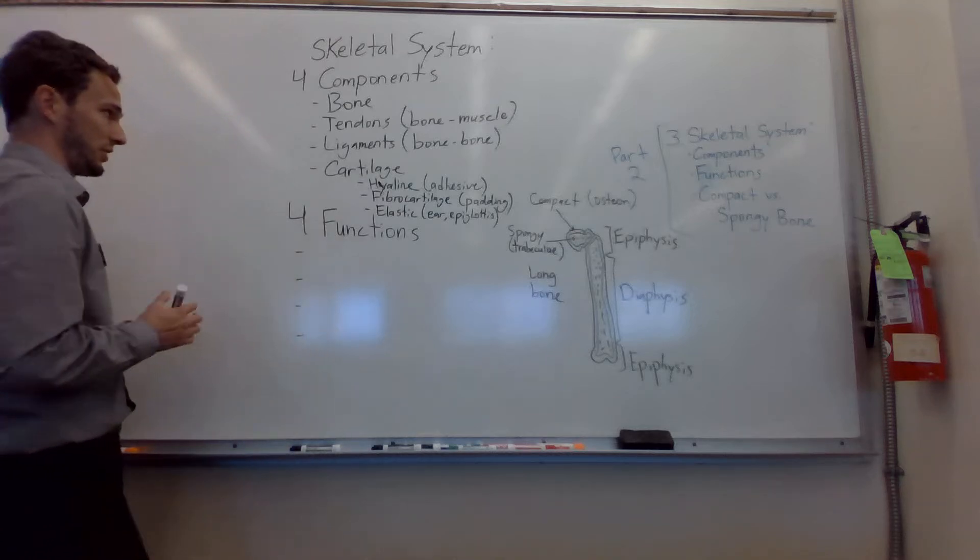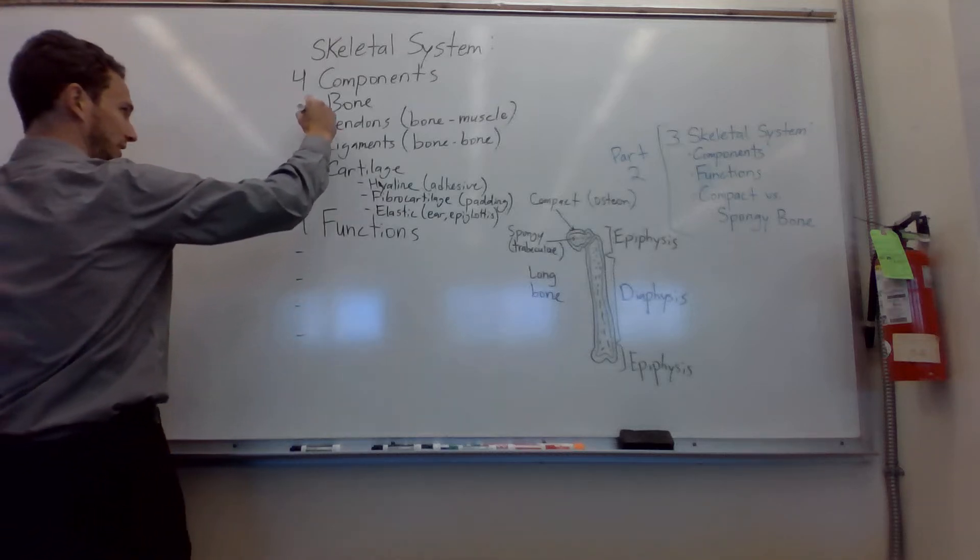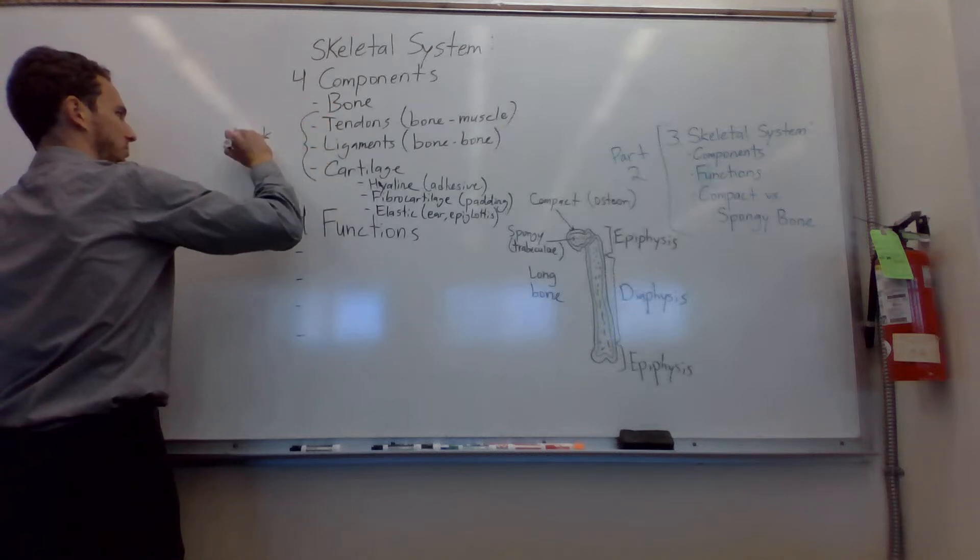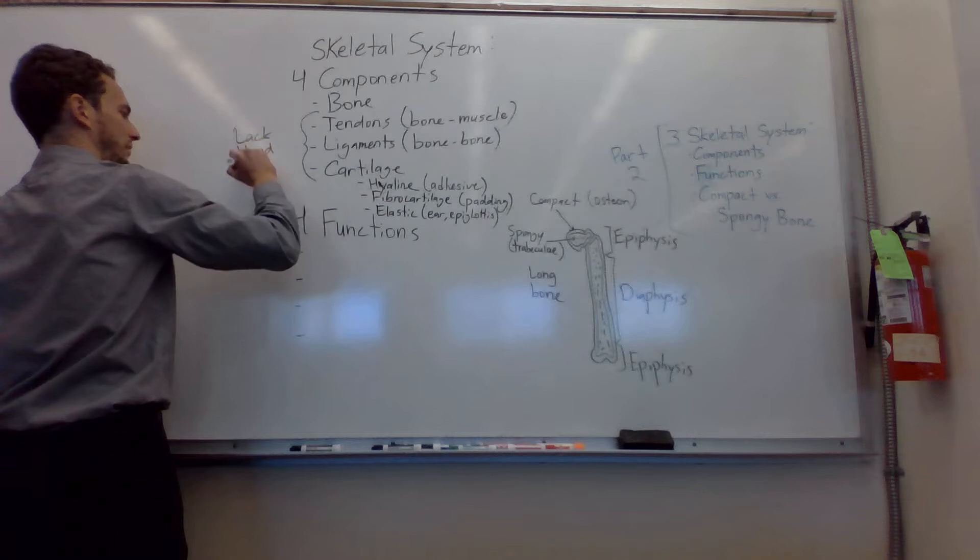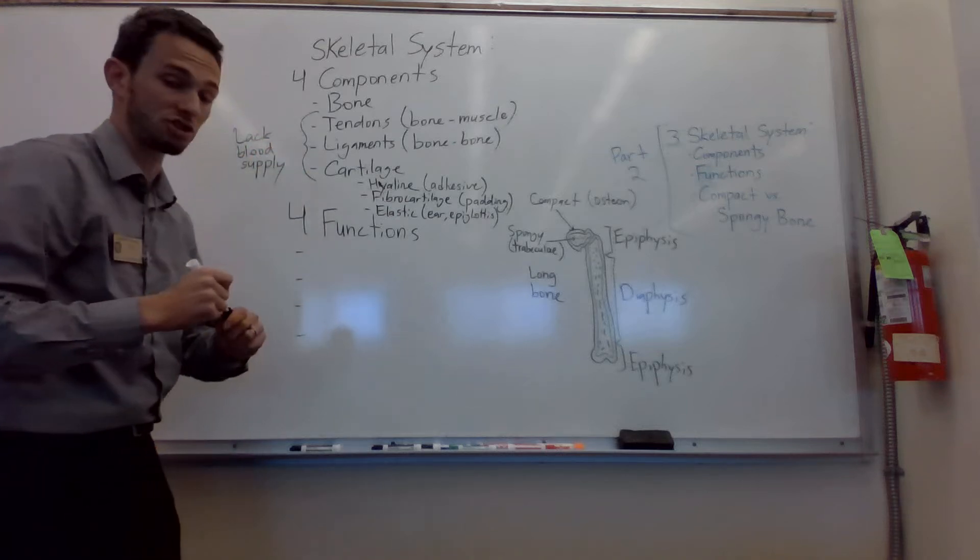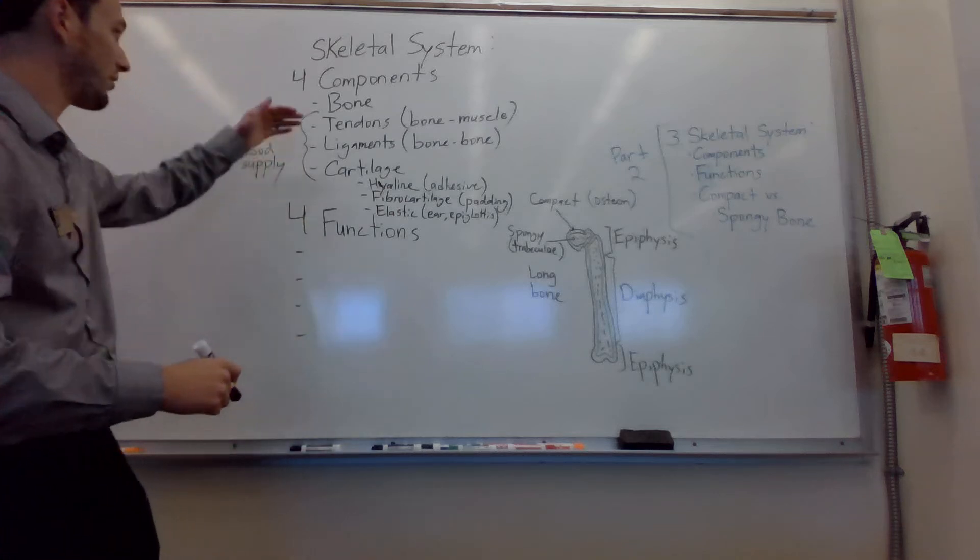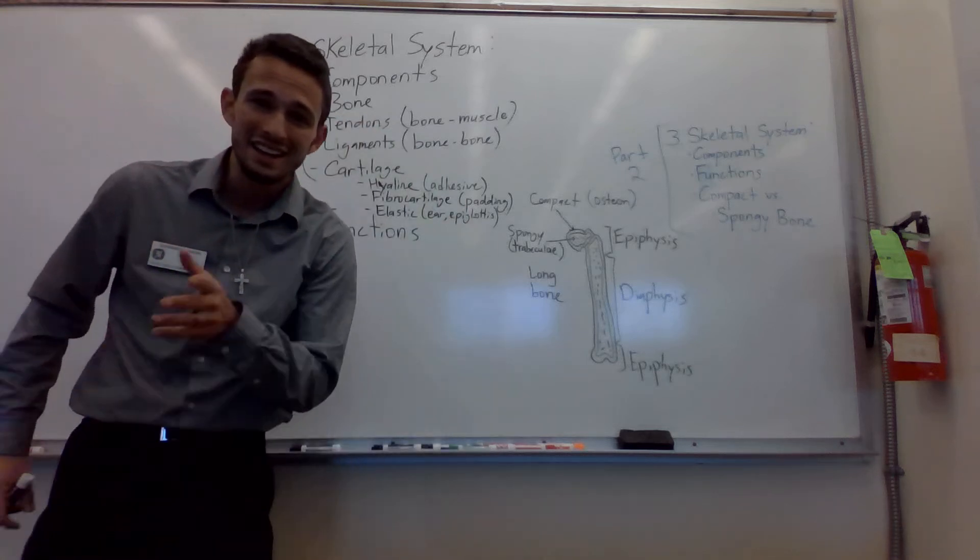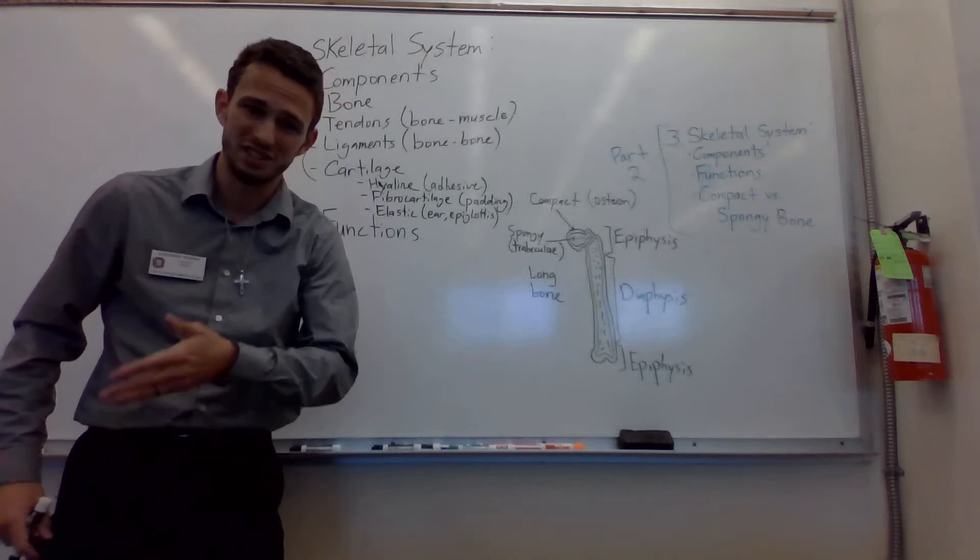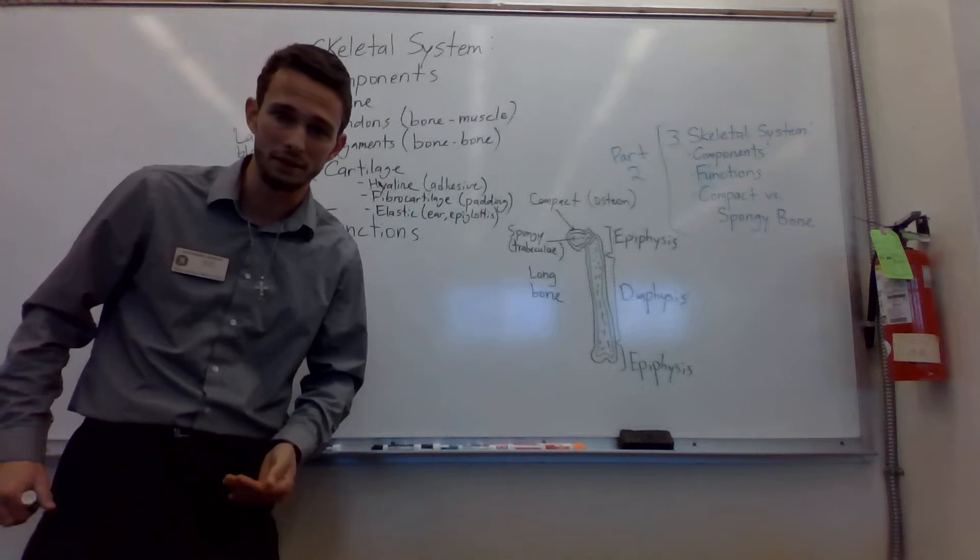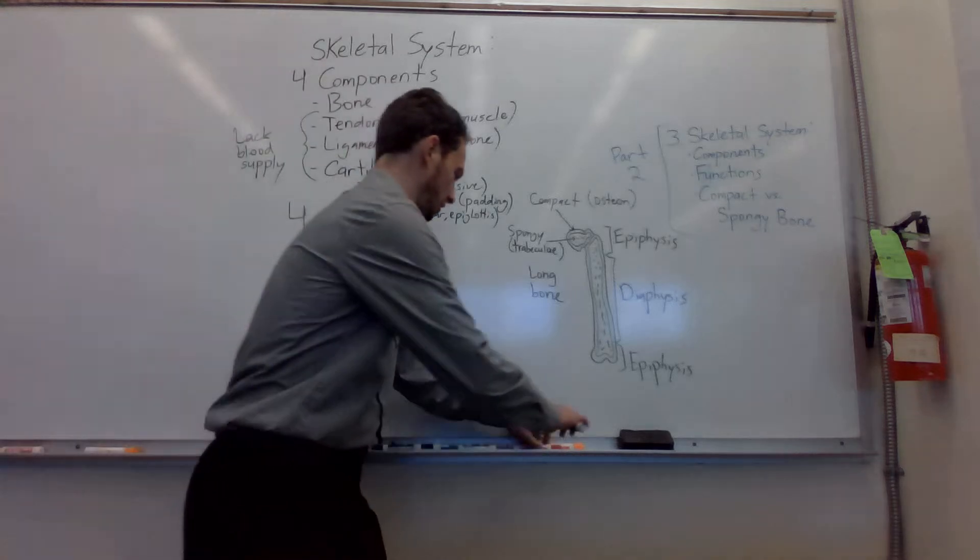So those are the four types. Let me briefly talk about these last three. These do not have a good blood supply. So they lack a good blood supply, which means that they heal incredibly slowly. So if you were to ever tear or rip apart or rupture any of these three things, it usually requires surgery, which is sad because it can't basically heal itself due to the lack of blood. So let me give you a quick little example.